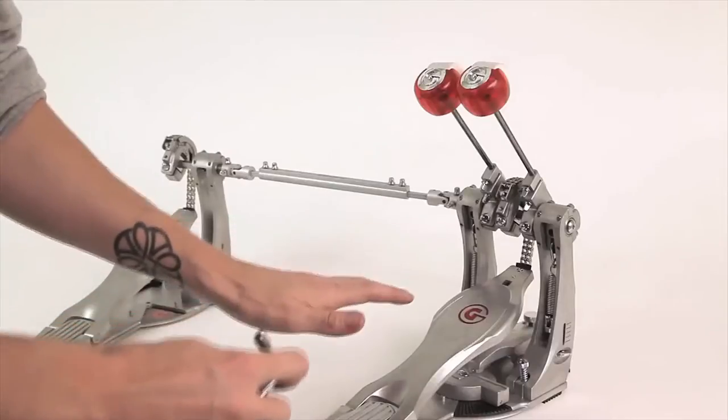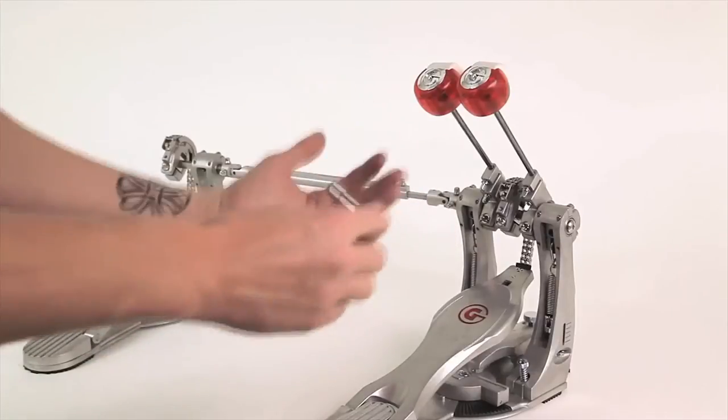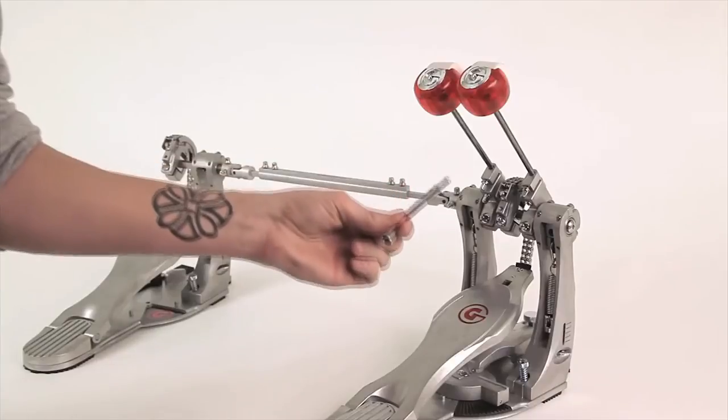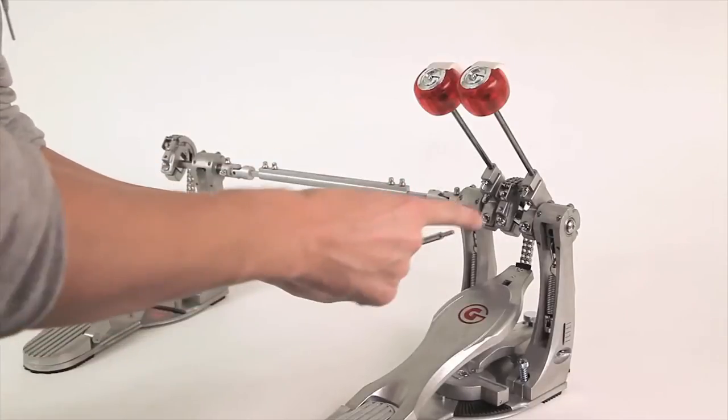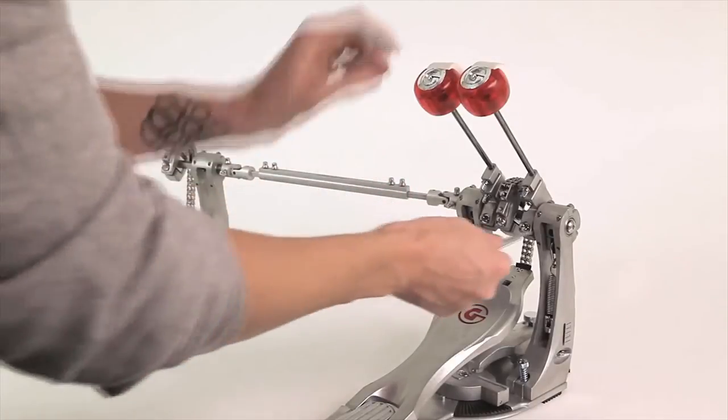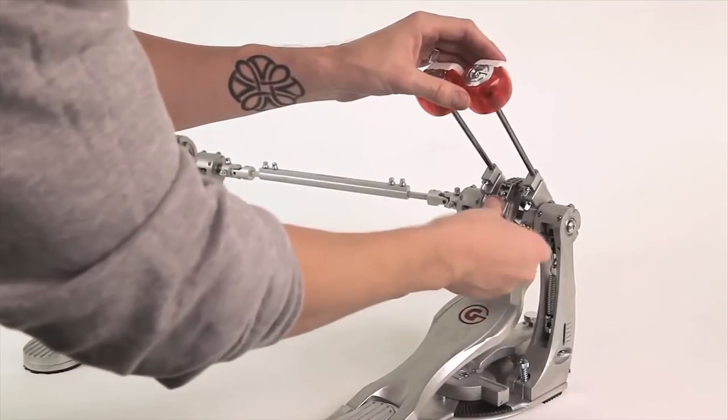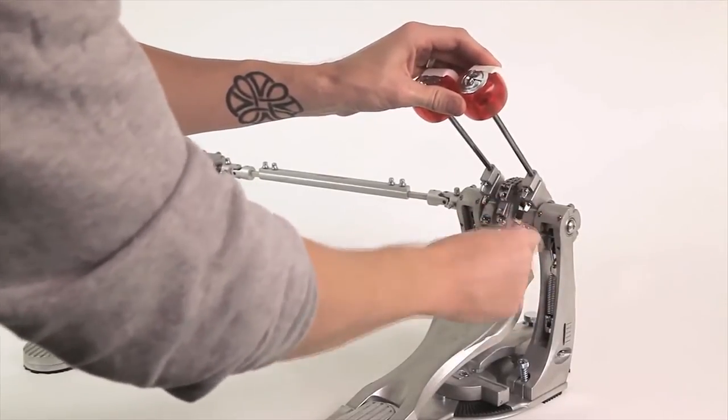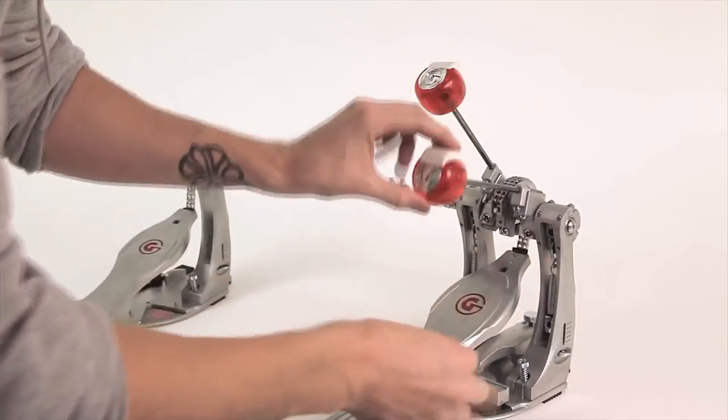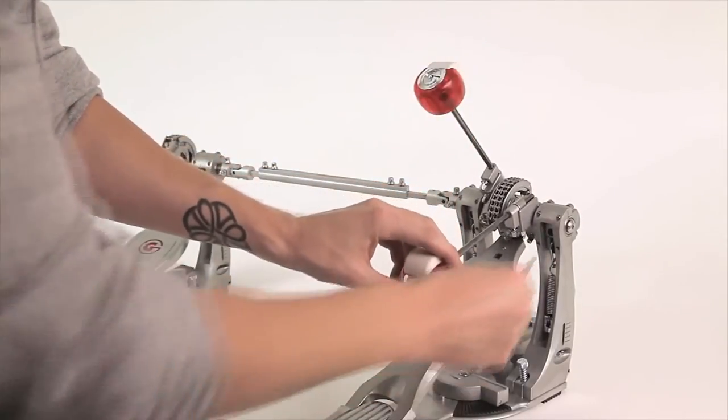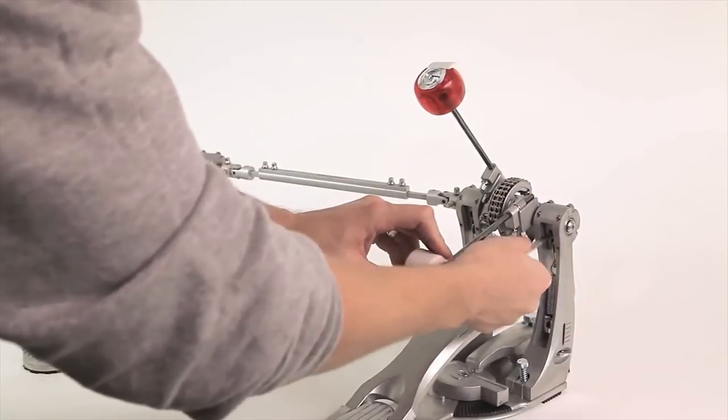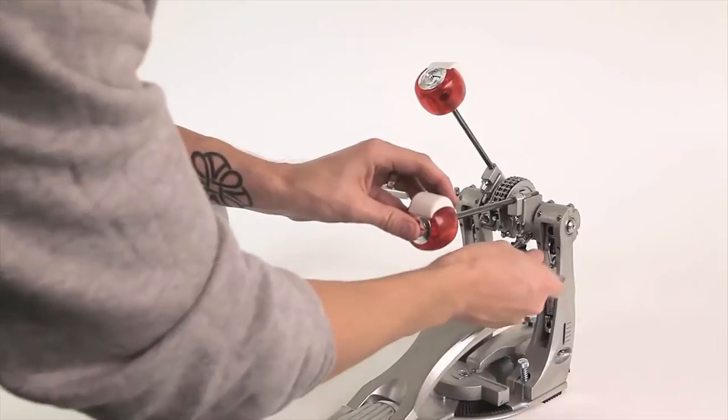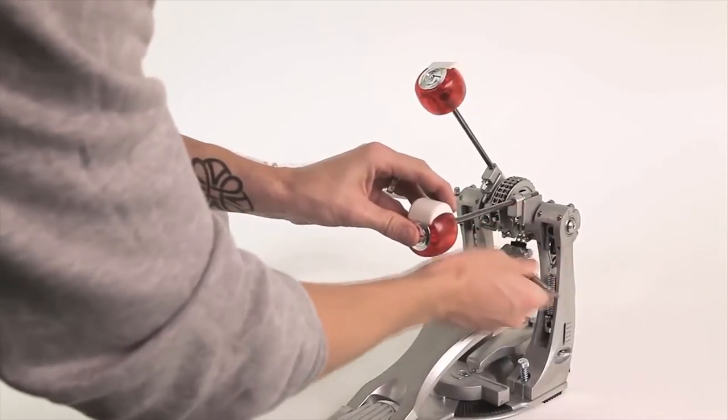You can adjust the pedal board height and beater angle completely independently from one another. To do so, take this cute little onboard tool kit and use the allen wrench side to release the axle of the pedal so it frees up the pedal board. Raise the pedal board to the desired height, lock it back down, and now you can change the angle of the beater.